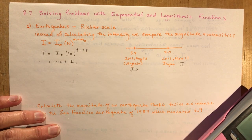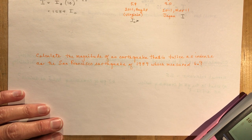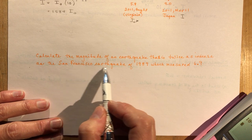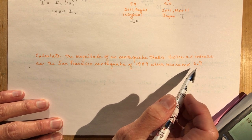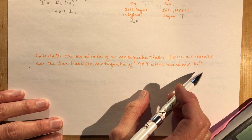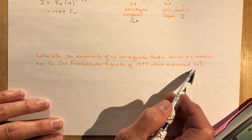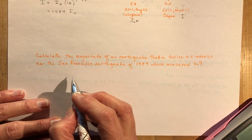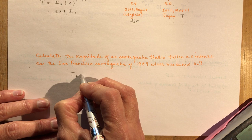I'm not going to write out a conclusion. You heard me say it. Okay. So calculate the magnitude of an earthquake that is twice as intense as the San Francisco earthquake of 1989, which measures 6.9. I want to know what is the Richter scale measurement of an earthquake that is twice as strong as a 6.9 earthquake.